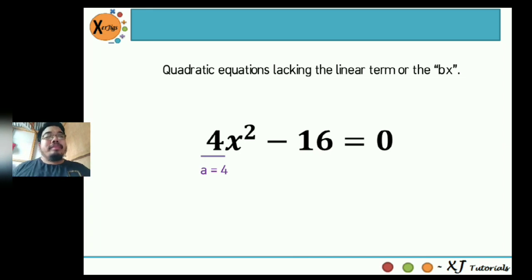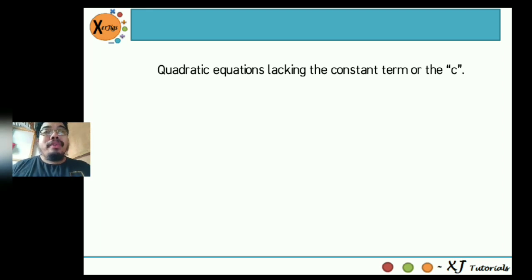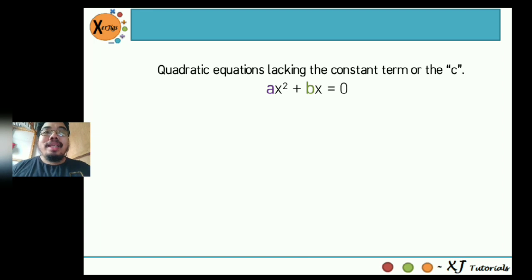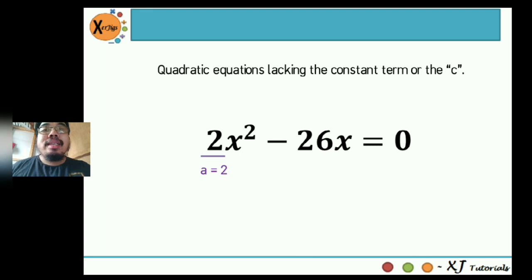How about quadratic equations lacking the constant term or c? If this is the case, then automatically c is not part of the standard form, and the format would be ax squared plus bx is equal to zero. Since there is no constant term, automatically c is equal to zero. For example: 2x squared minus 26x is equal to zero. The value of a, beside x squared, is positive 2. The value of b, beside x, is negative 26. And c is automatically zero since we don't have a constant term.